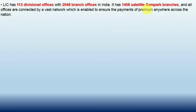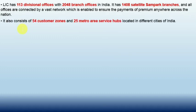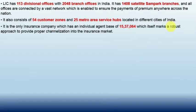All offices are connected by a vast network which is enabled to ensure the payment of premium anywhere across the nation. It also consists of 54 customer zones and 25 metro area service hubs located in different cities in India. LIC is the only insurance company which has an individual agent base of 1,50,37,064 — a huge number which itself makes a robust approach to provide proper reach into the insurance market.